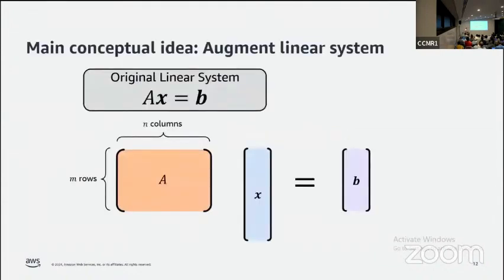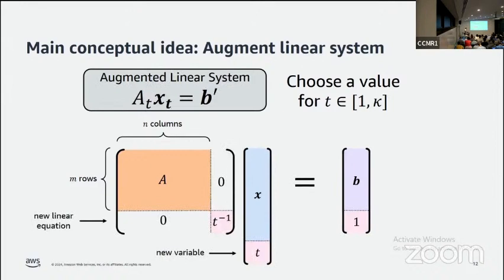First I'd like to describe the main conceptual idea of the algorithm, and I think it's pretty simple. We take our original m by n linear system and augment it by adding one row and one column. We'll choose a value t between 1 and κ that we have control over, and add 1/t to the bottom right corner. We also introduce a new variable and add a one to the right hand side in the last position. So we've added one new variable, one new linear equation involving that variable, completely uncoupled from all other equations.